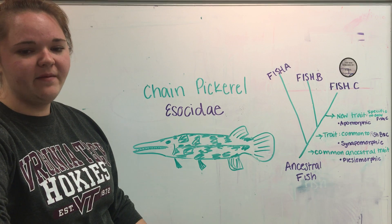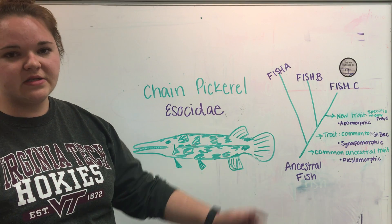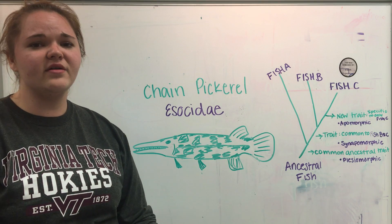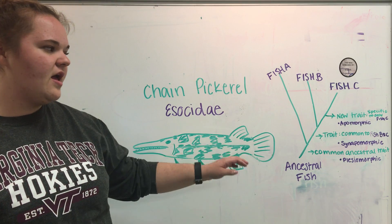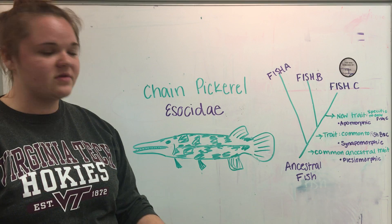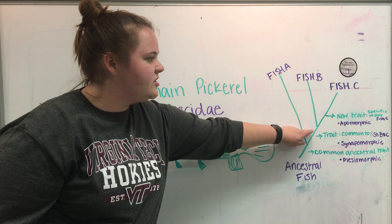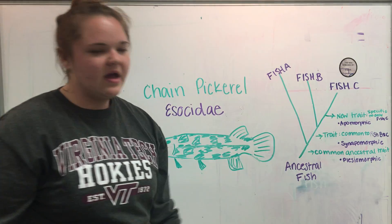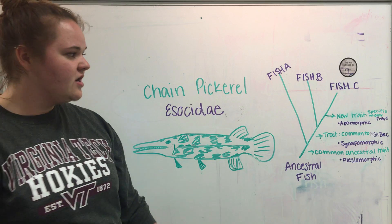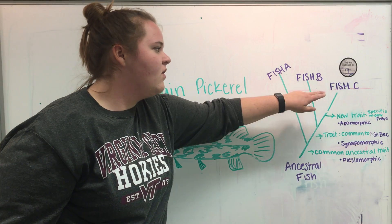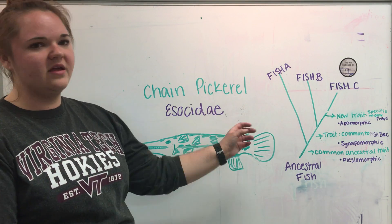There are different kinds of traits. The more ancestral traits are plesiomorphic traits — things like a single dorsal fin with no spines. Then we have synapomorphic traits, which are a common trait that is more derived than the plesiomorphic traits; here this trait would be shared by fish B and fish C. And finally, we have apomorphic traits, which are specific to a single fish or species.